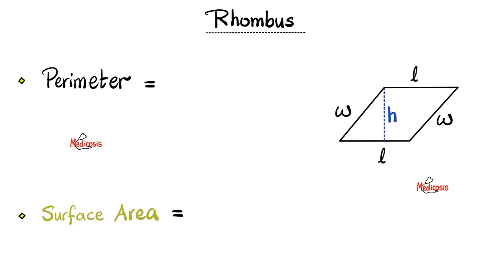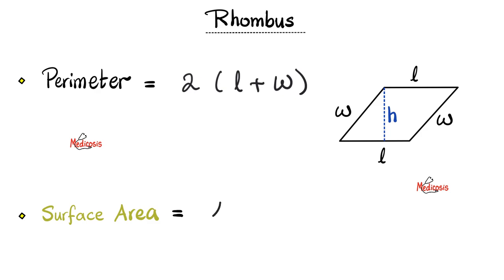Next, the rhombus. The perimeter of the rhombus is very similar to the parallelogram — multiply 2 by the total of length plus width. How about the surface area of the rhombus? Just like the parallelogram: the length multiplied by the vertical height.